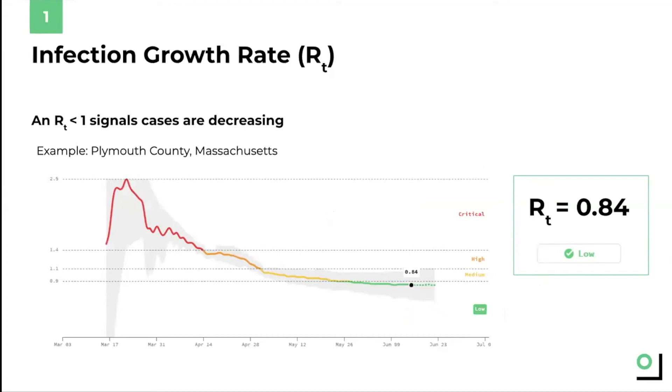This is an example of what our R_t chart looks like and this was pulled directly from the COVID Act Now website. You can see that in Plymouth County, Massachusetts, up until late May, R_t was above one which means that the number of COVID cases was increasing. But since late May, Plymouth County's R_t has been below one and it was recently as low as 0.84. This means that since late May, the number of cases has been decreasing.